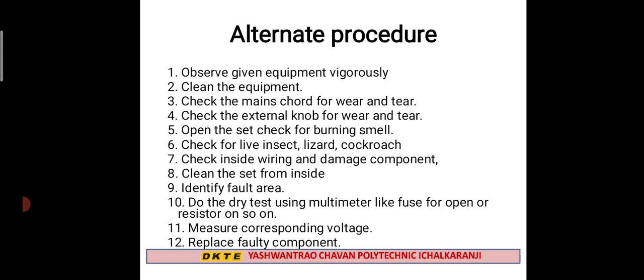You can measure voltage and use standard values to replace faulty components. This completes troubleshooting in the case of the TV receiver. The 4th unit is now complete. From the next lecture we will start with the 5th chapter. Thank you.